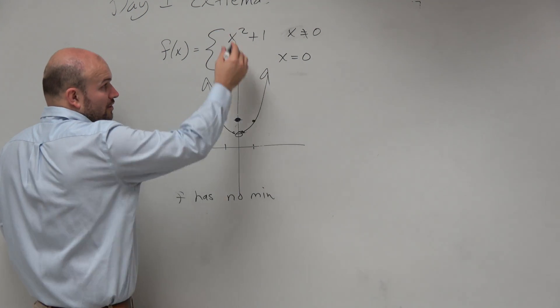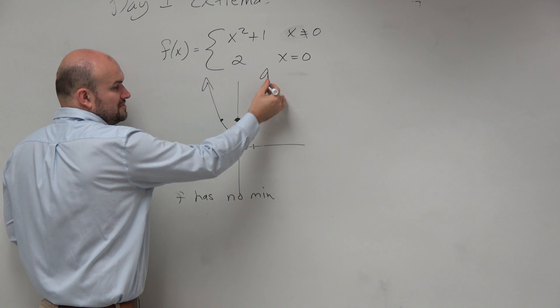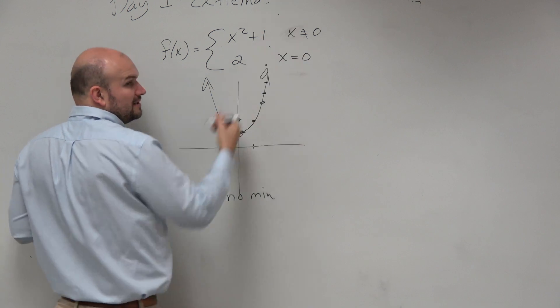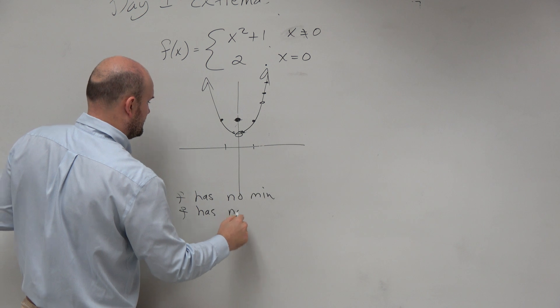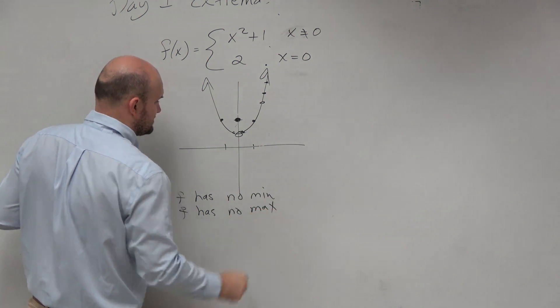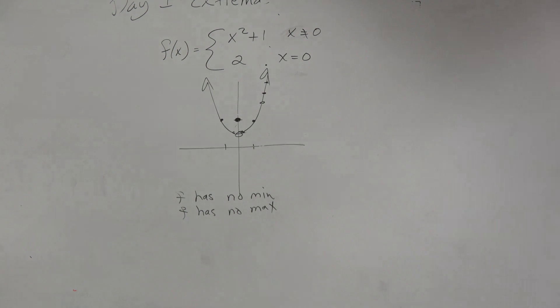So obviously, if you say the maximum was here, well, then this one's higher. Well, then this one's higher, then this one, and then this one, and then this one. So it just keeps on going up. So f has no max. All right.